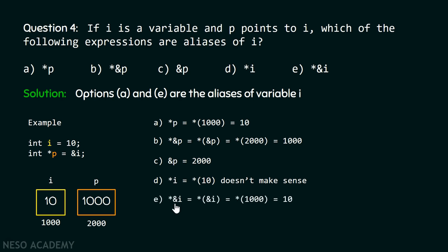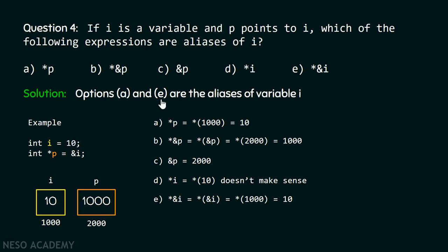For option (e), `*&i`: `&i` gives us the address of i, which is 1000. Then with the star operator we access the content at location 1000, which is 10. Therefore, `*(1000)` equals 10, so `*&i` equals 10, which equals i. Hence, options a and e are the aliases of variable i.